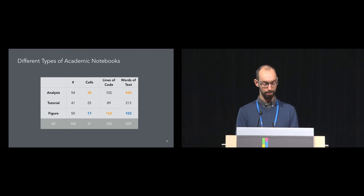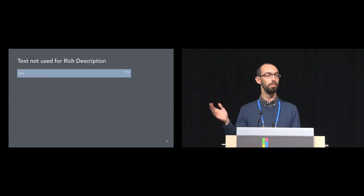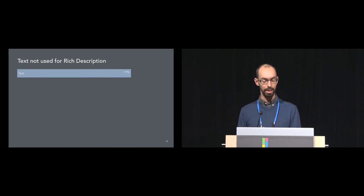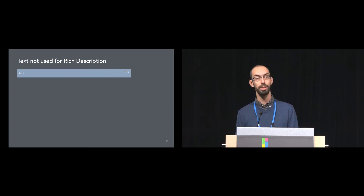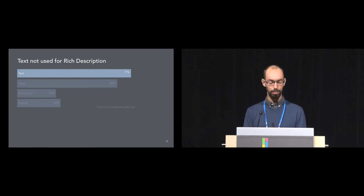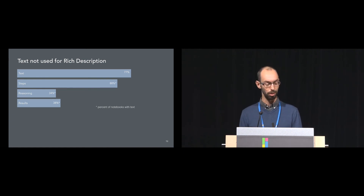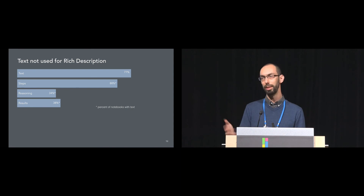We wanted to dig deeper into the smaller corpus and ask not just whether notebooks have text, but how they use the text. First, we coded whether notebooks have text at all — only a slight improvement, with 77% of academic notebooks having text describing the analysis. We then coded what the text was doing: is it describing steps ("we import data, we fit a linear model"), describing reasoning ("we use this model because of these assumptions"), or describing results ("here's how to interpret this")? Most notebooks with text — 88% — described steps, but very few, just around a third, went to this higher level of narrative discussing intentions, motivations, reasoning, and results.